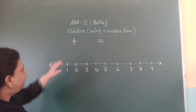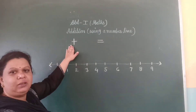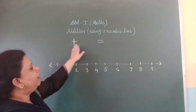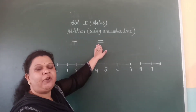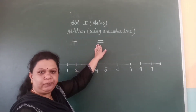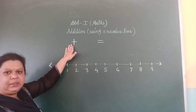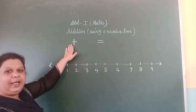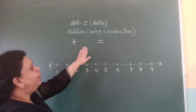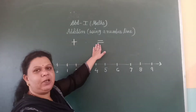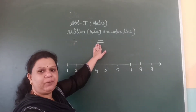Children, we use this symbol to add, and this symbol for is equal to. This symbol is read as plus symbol, and this symbol is read as is equal to symbol.